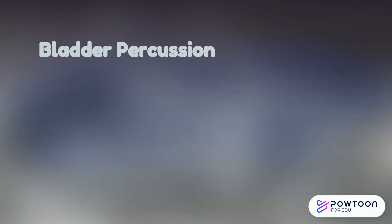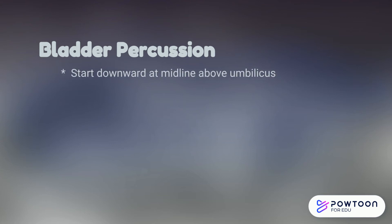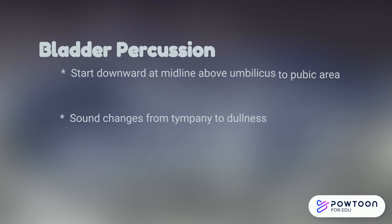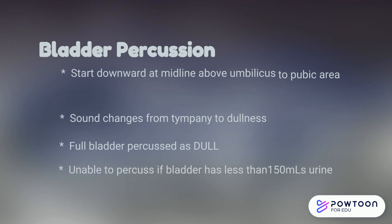To percuss the bladder, you would start just above the umbilicus and go down towards the pubic area. The sound should change from tympani to dullness. A full bladder will be percussed as dull. If you're unable to percuss the bladder, it may have less than 150 milliliters of urine in it.